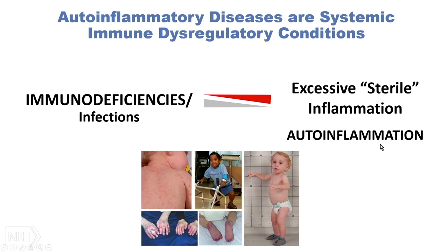I put this slide here to differentiate the immune deficiencies from the auto-inflammatory diseases. The auto-inflammatory diseases are characterized usually by early onset of rashes, fevers, and other organ manifestations. The inflammation is sterile — there is no microorganism involved. And differently from many of the PIDs, they don't have susceptibility to infections.